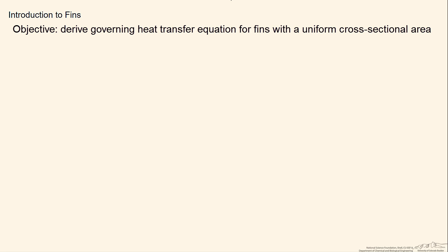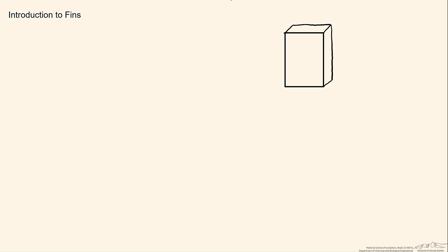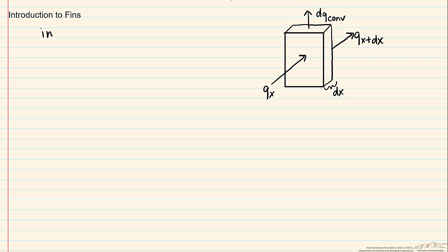So let's start with a differential element from a fin, and we're going to do an energy balance around this. Here we have our dx, we have coming in our q sub x, and coming out from the back, we have our q at x plus dx. In addition, we have convective heat transfer that we'll call dq convective. So our energy balance is going to simplify to that in equals out.